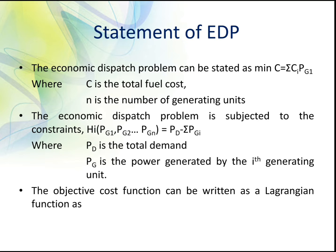The economic dispatch problem has an objective function and is also subjected to a constraint. So the objective cost function can be written as a Lagrangian function: C* = summation from i=1 to n of C_i(P_gi) plus lambda times (Pd minus summation from i=1 to n of P_gi), where lambda is the Lagrangian multiplier.